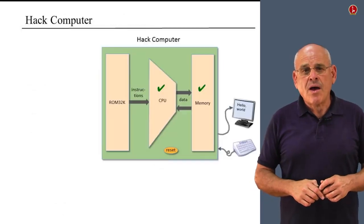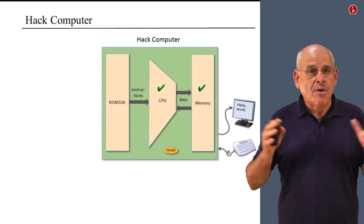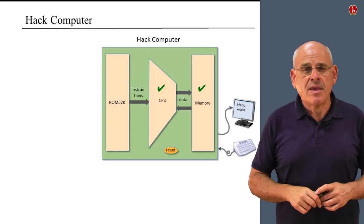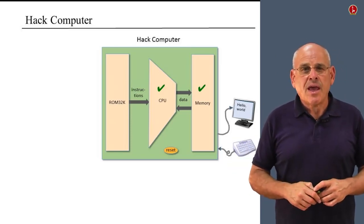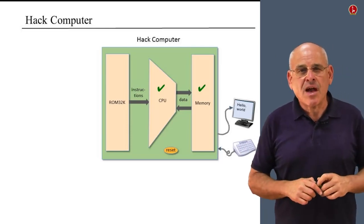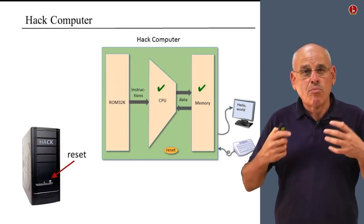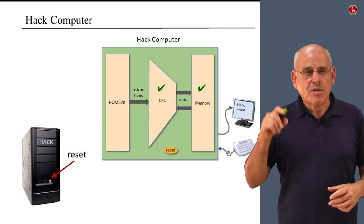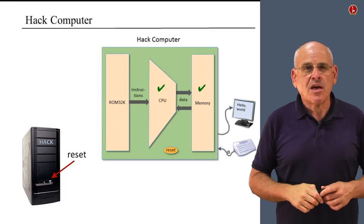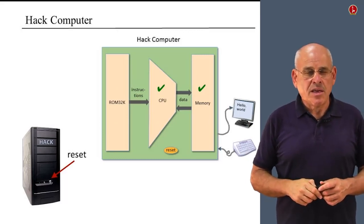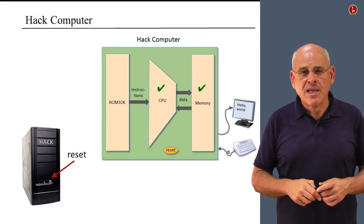Now that we know how to build the CPU and implement the memory, let's go back to the overall computer architecture. I've added something: the reset button. If we actually build this computer, we'll have a black box with a reset button, which corresponds to the orange reset oval in the diagram.